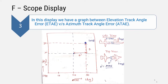This is the targeting system. For example, in the F scope display, we have a blue color target. The target is at the center of the graph — when the target is locked, it is centered. This is the basics of the F scope display.